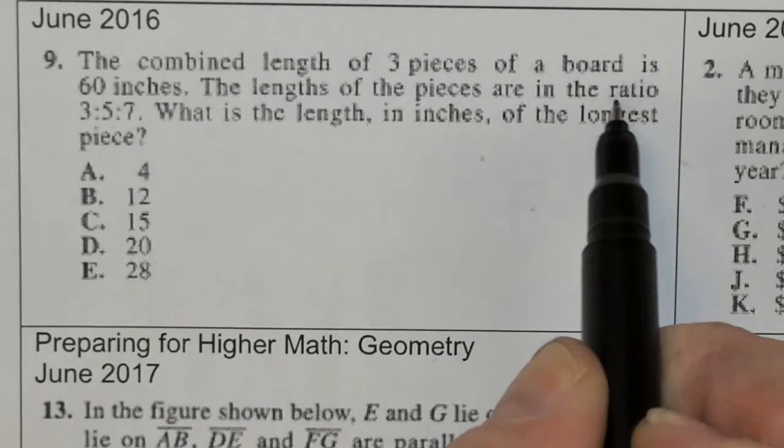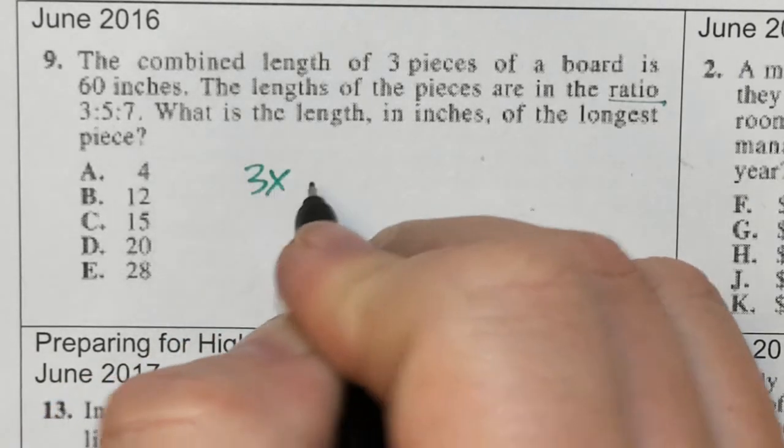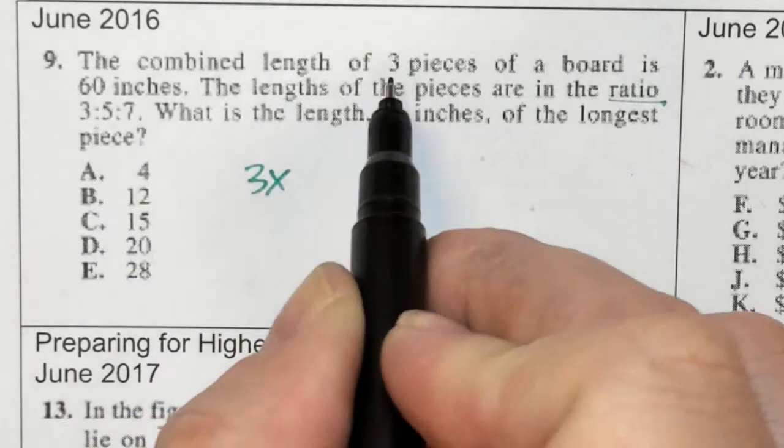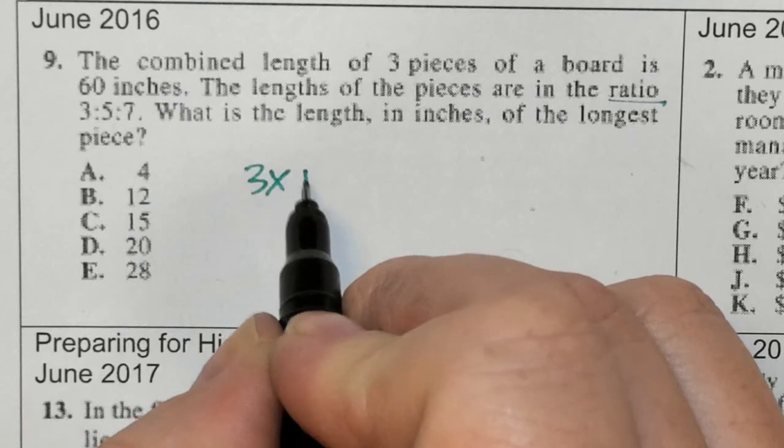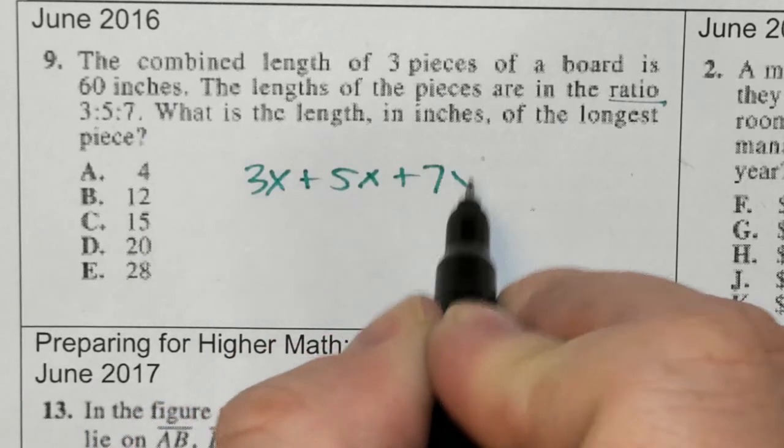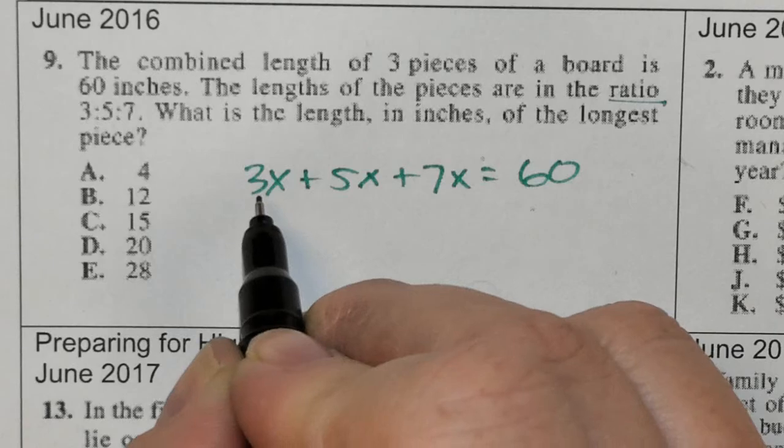Okay, so they're ratios. That means 3x - the combined board is 60, which is 3x plus 5x plus 7x equals 60.